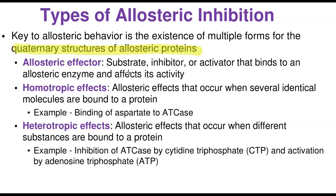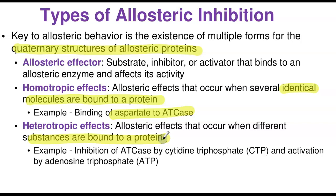An allosteric effect can be homotropic or heterotropic. A homotropic effect is when several identical molecules are bound to the protein — for example, binding of CTP to ATCase. The heterotropic effect is when different substances bind; for example, ATCase being inhibited by CTP and activated by ATP. ATP is a good allosteric activator of ATCase, making it a good example of a heterotropic effect.